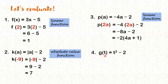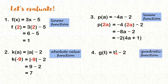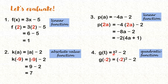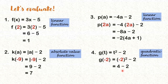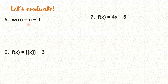What about number 4? Anong klaseng function ito? If you look at the variable, ang exponent na ngayon ay 2. Kasi kung 1, linear function yan. What about if the exponent is 2? This one is a quadratic function. Now we get g of negative 2. We simply substitute negative 2 to this variable t. Yung buong negative 2 ang nakasquare, kasi yung t dito yung nakasquare. So what is negative 2 squared? You'll have 4. What is 4 minus 2? It's 2.